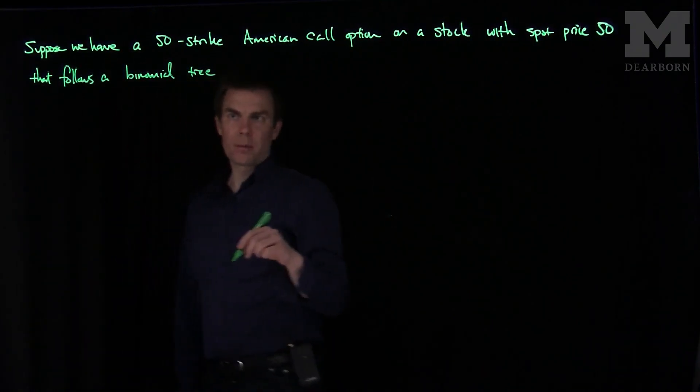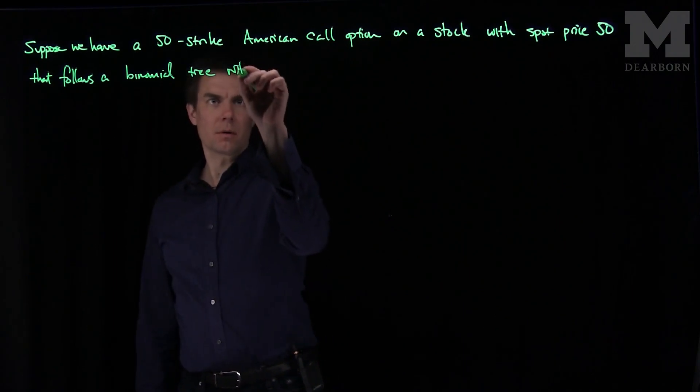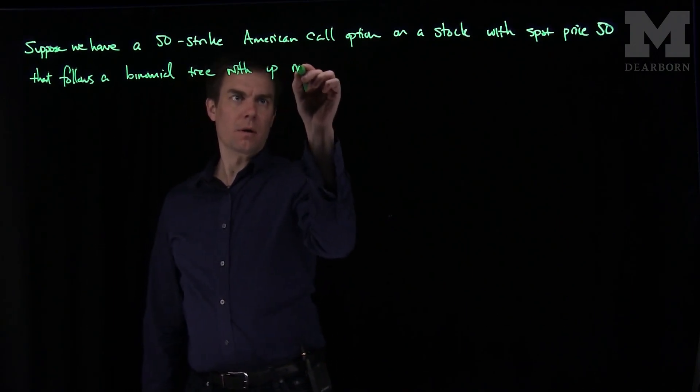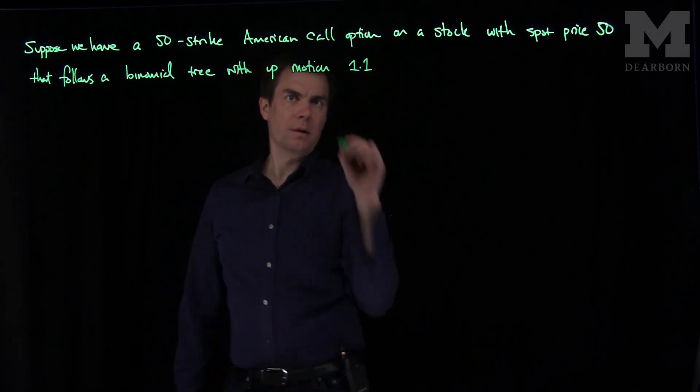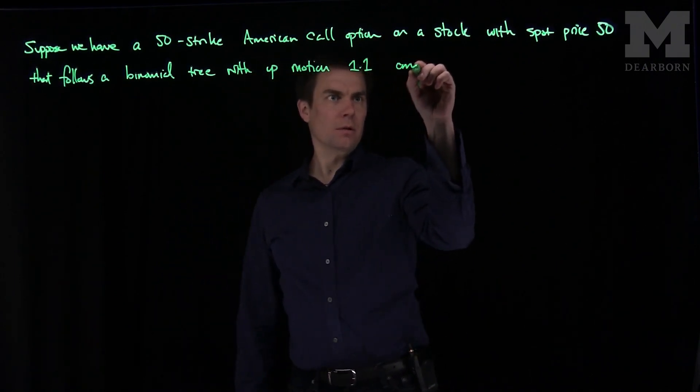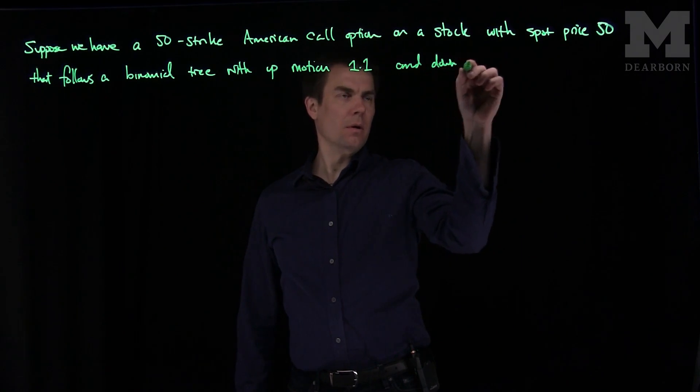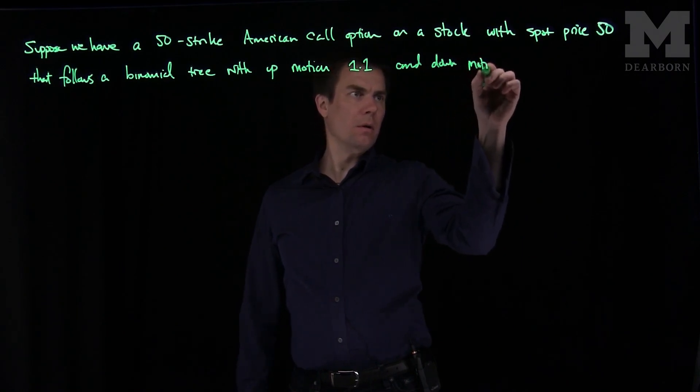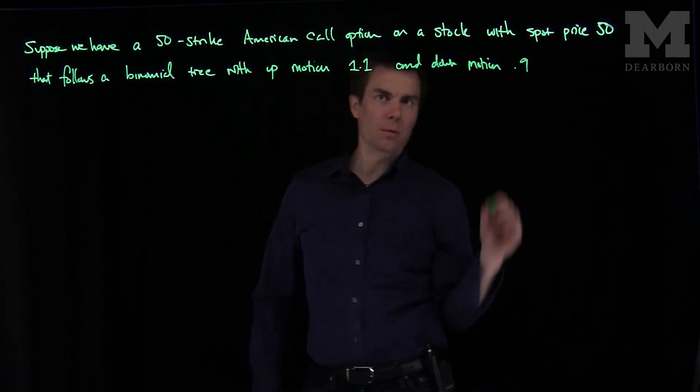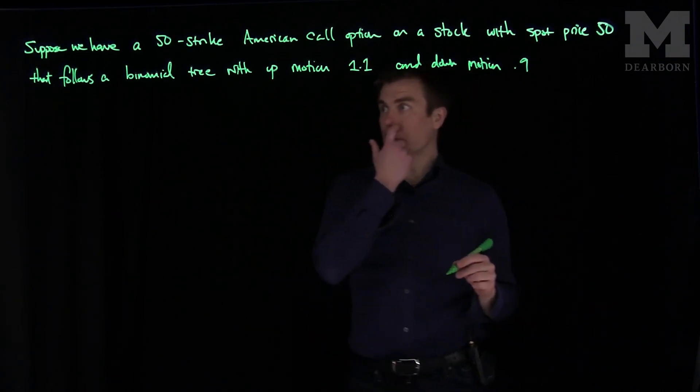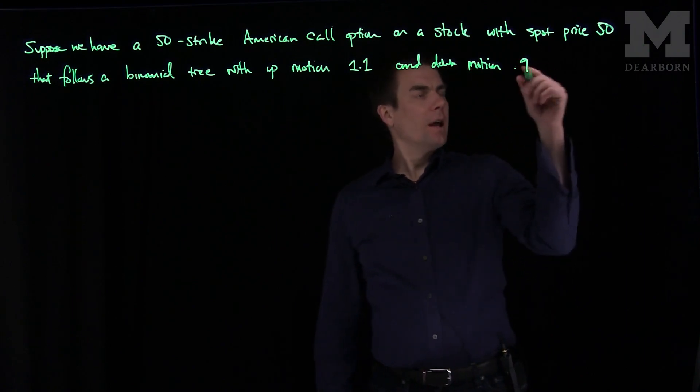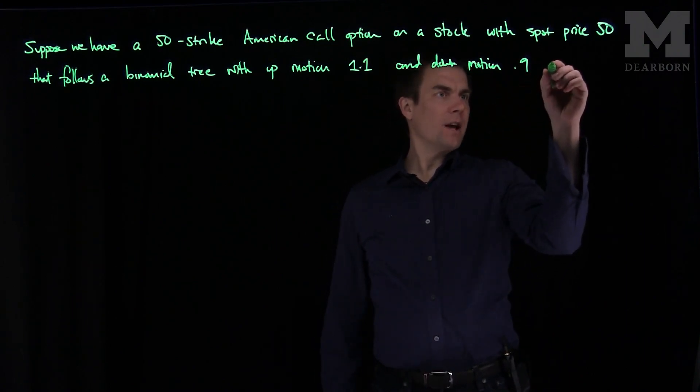With up motion 1.1 and down motion 0.9. In other words, it is going to go up by 10% or down by 10% at every single node of the tree, and every step.